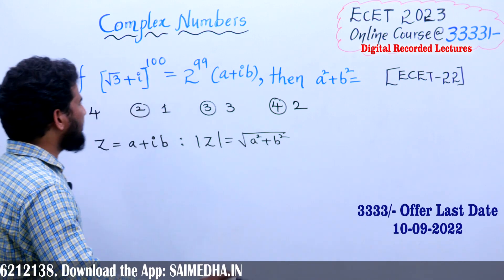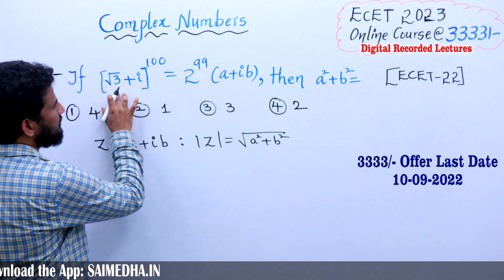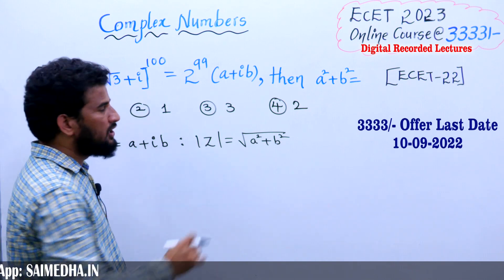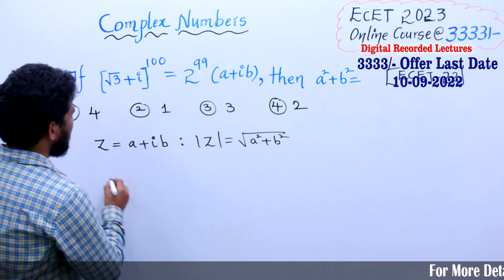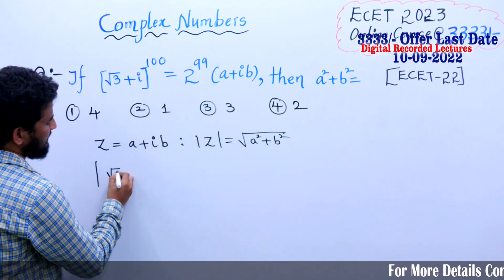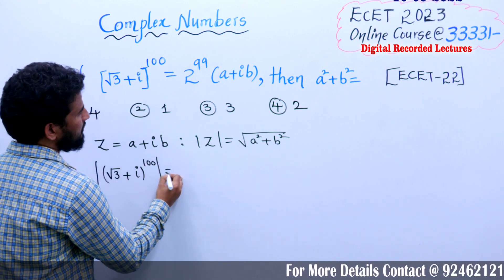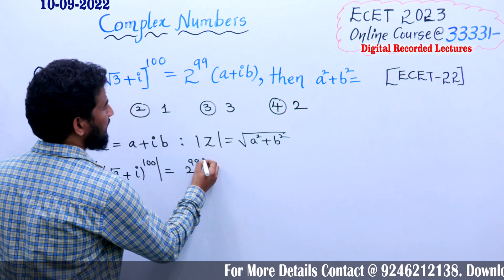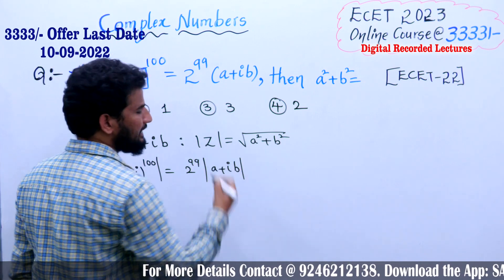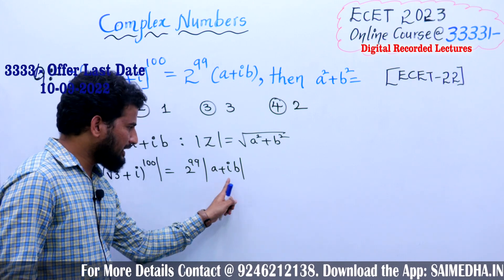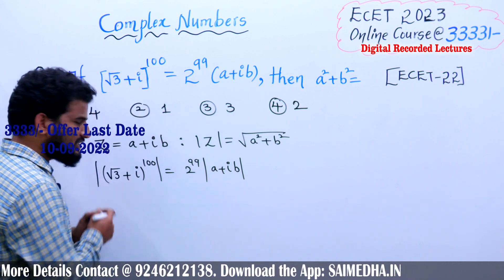The question is (√3 + i)^100 = 2^99(a + ib). I am just applying the modulus here: |(√3 + i)^100| = |2^99(a + ib)|. The modulus of a + ib is going to be √(a² + b²).